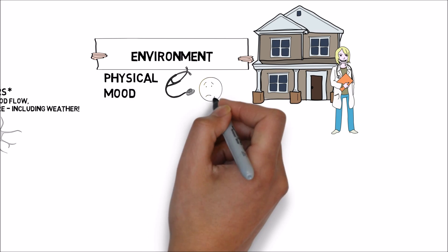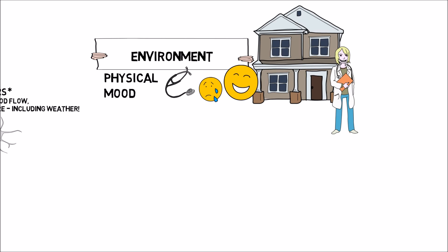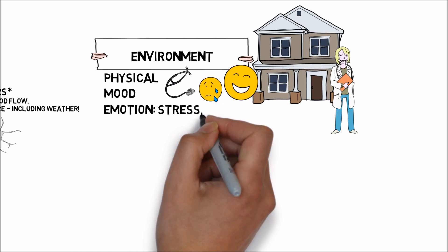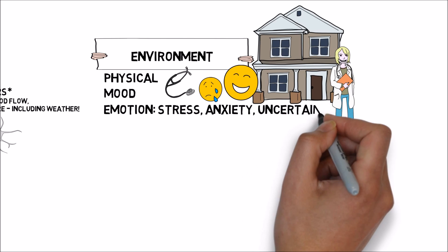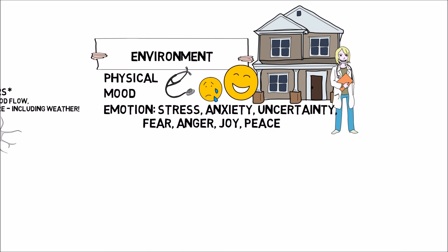Our overall mood is a very important environmental factor — it influences many things. Also our emotions, such as stress, anxiety, uncertainty, fear, anger, joy, and peace. All of these things are chemistry. They are electricity. They are information and impulses that must be transmitted to our brain, just like information from our body, and must be reviewed and analyzed so decisions can be made.